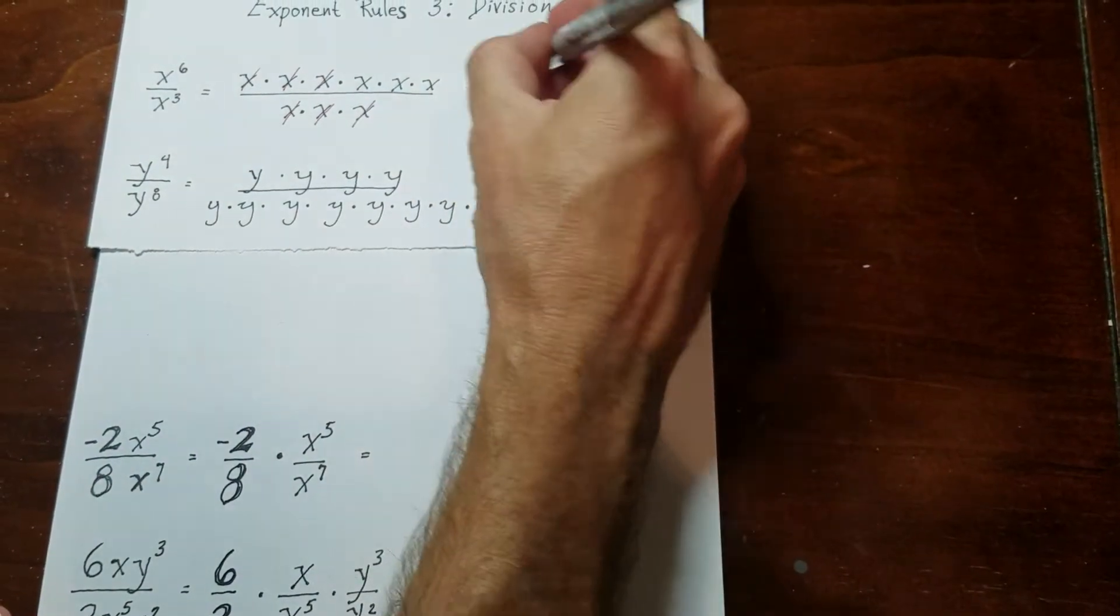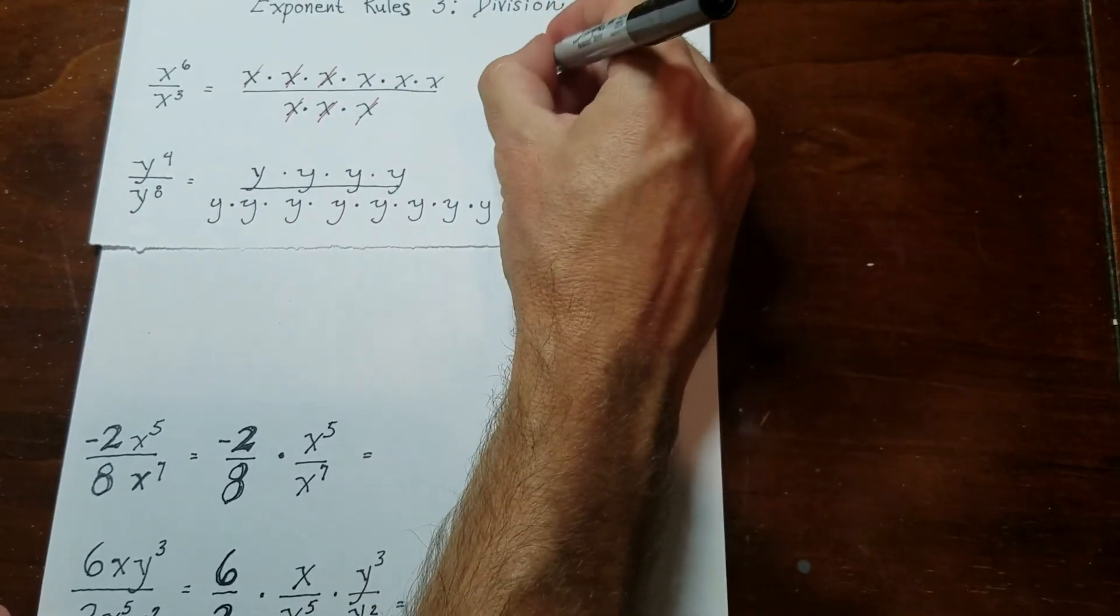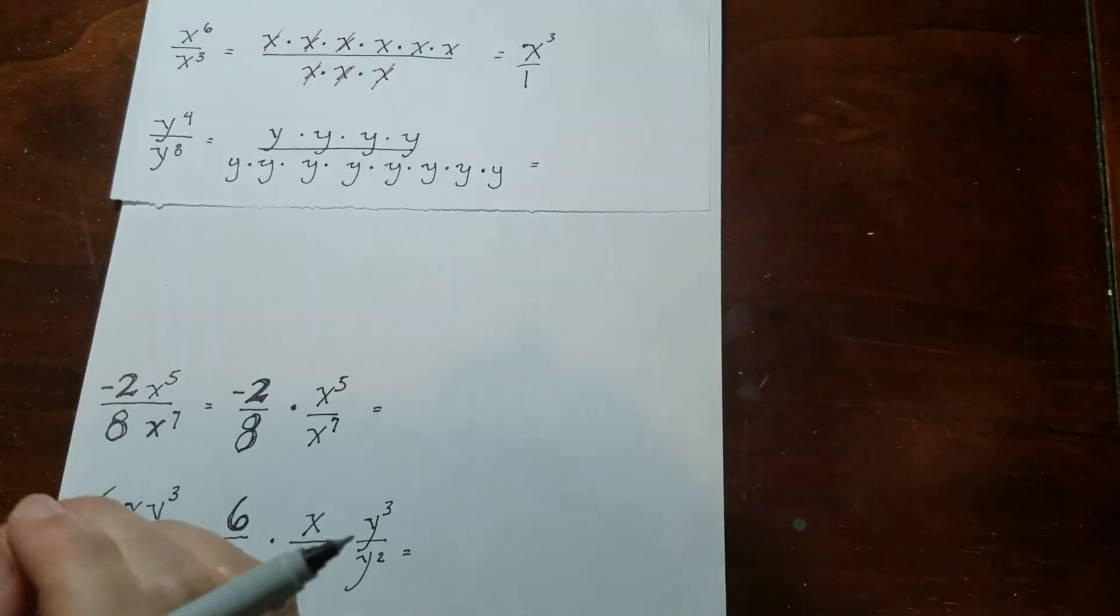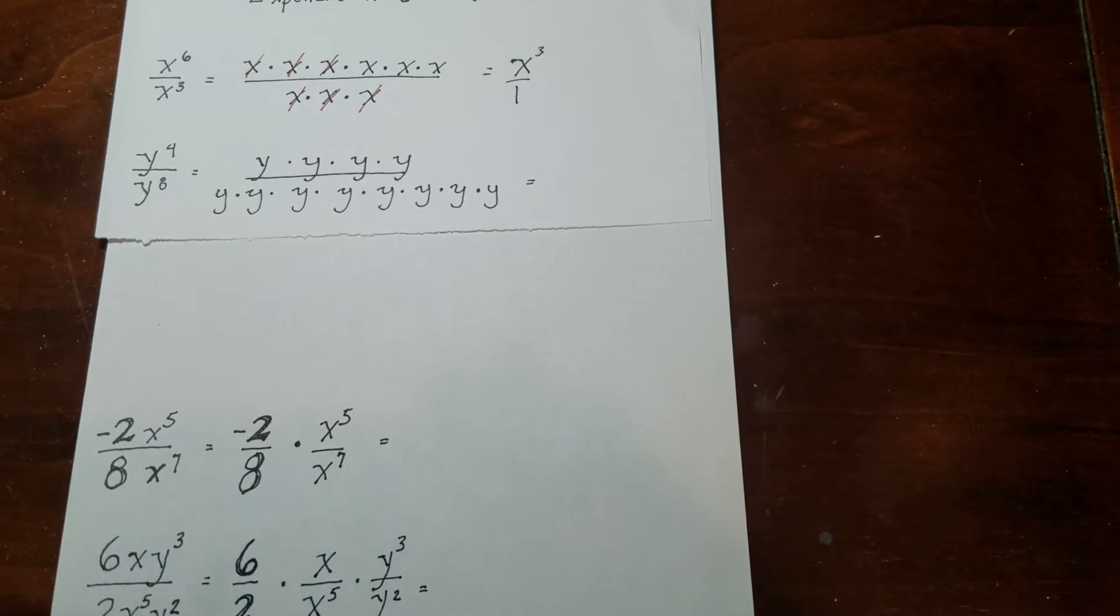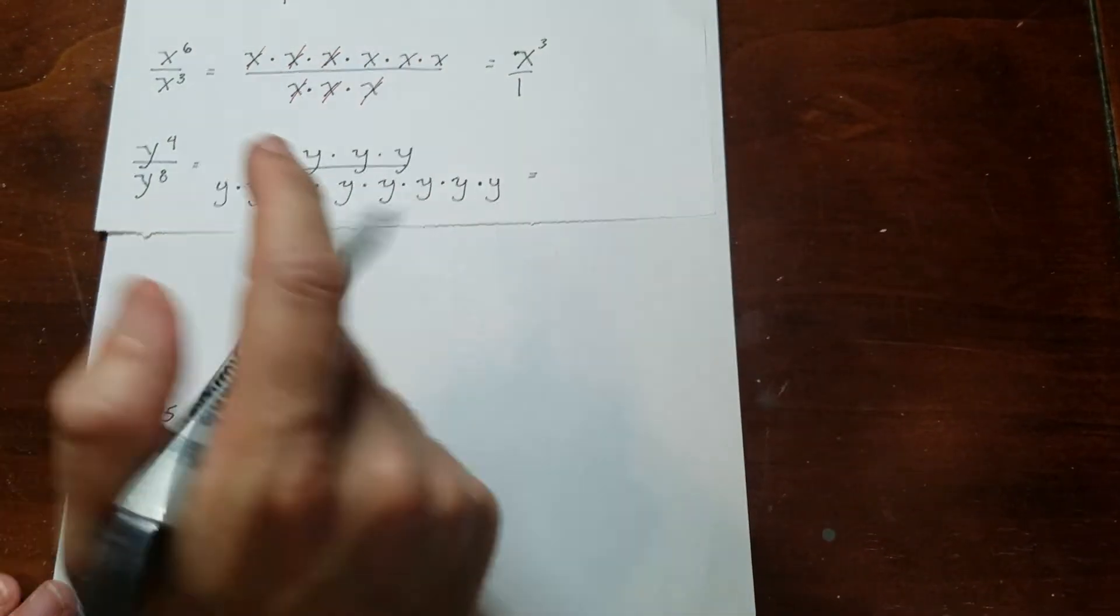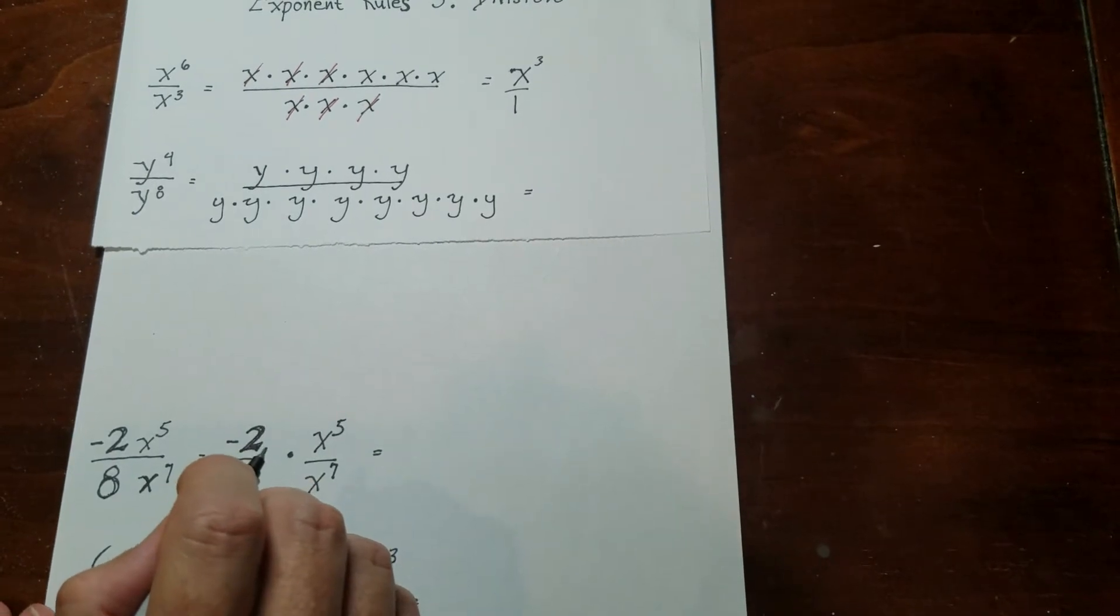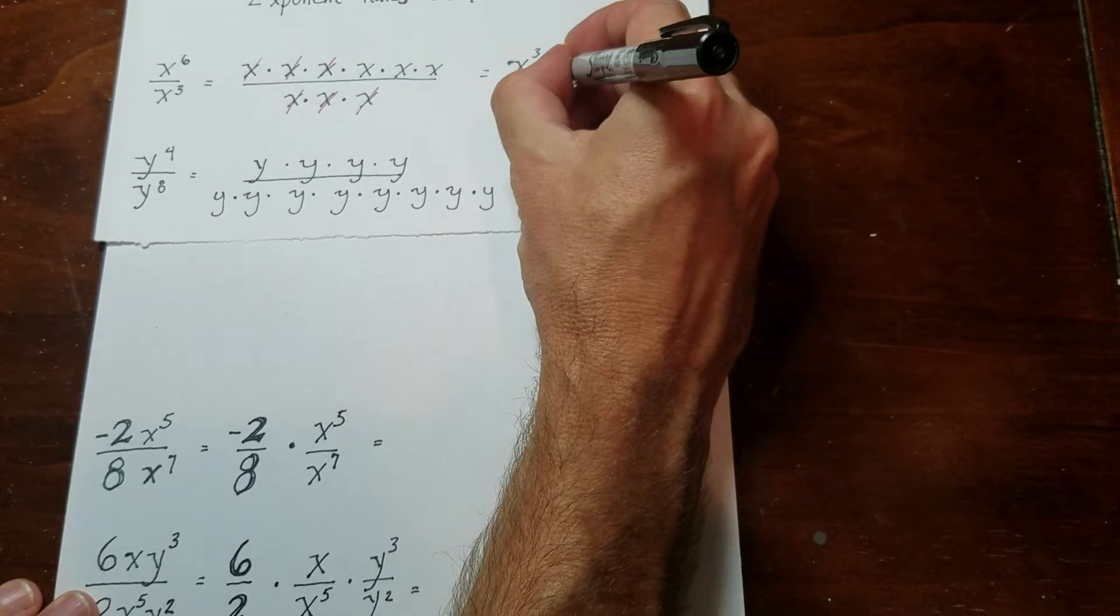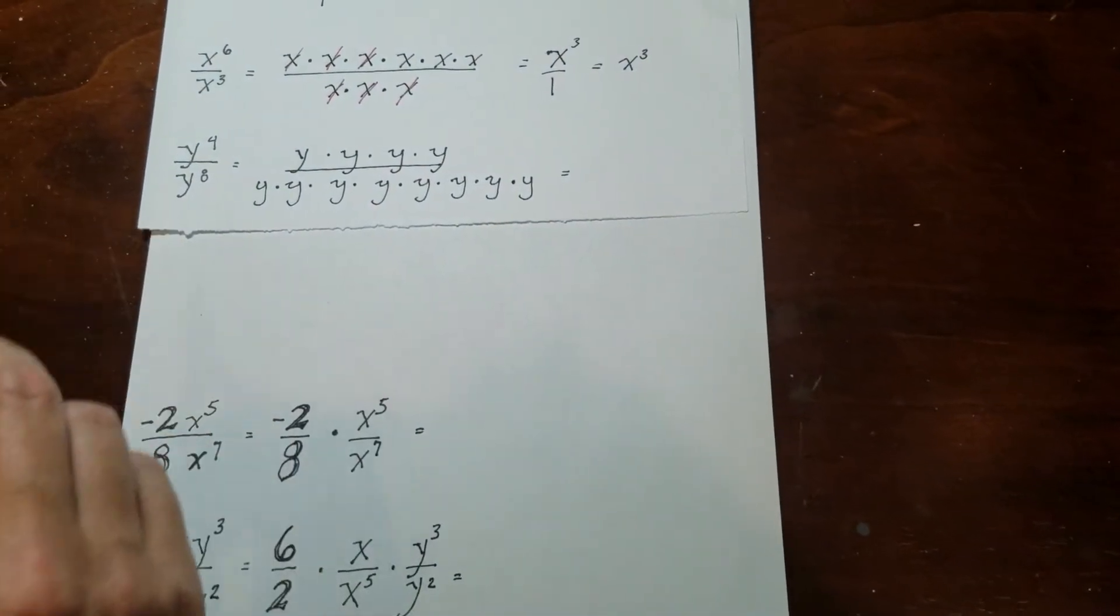So you could say this is x to the 3rd power over 1. Remember when you're doing this, that when everything cancels out from either the top or the bottom, that you always put a 1. Don't put 0. Like, oh, there's nothing down here now. Because if I put a 0 down here, I just broke math. You can't have a 0 on the denominator, so I put 1. But we know that x to the 3rd over 1 is just equal to x to the 3rd.